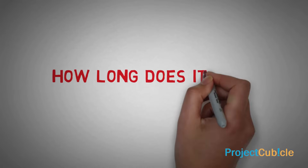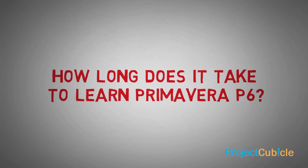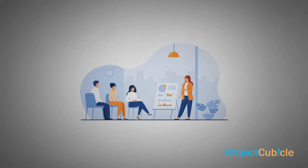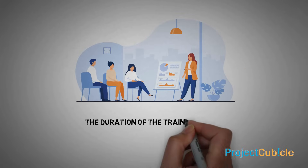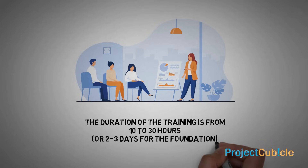How long does it take to learn Primavera P6? The duration of the training is from 10 to 30 hours for the Foundation level.